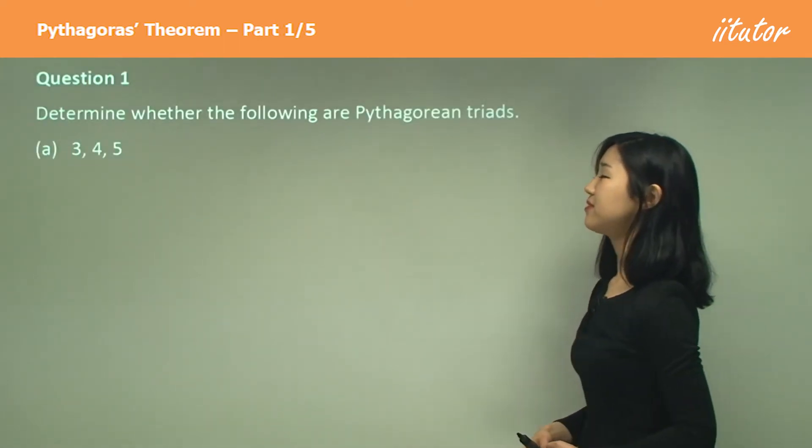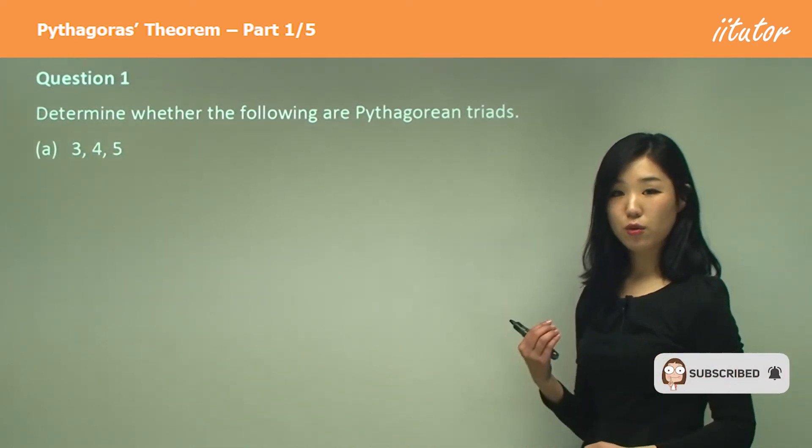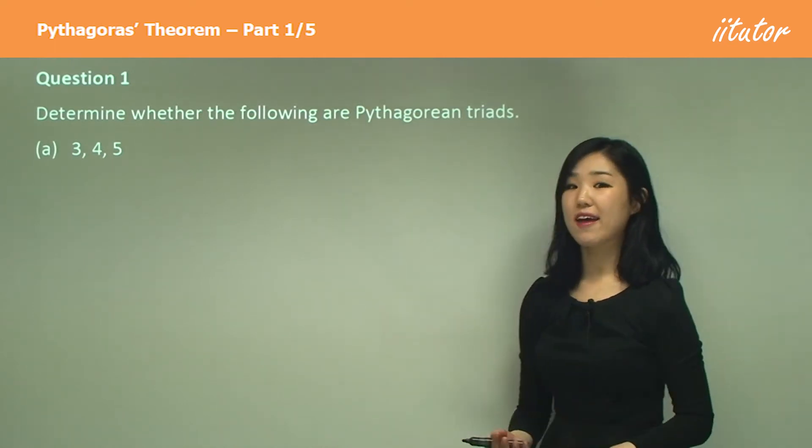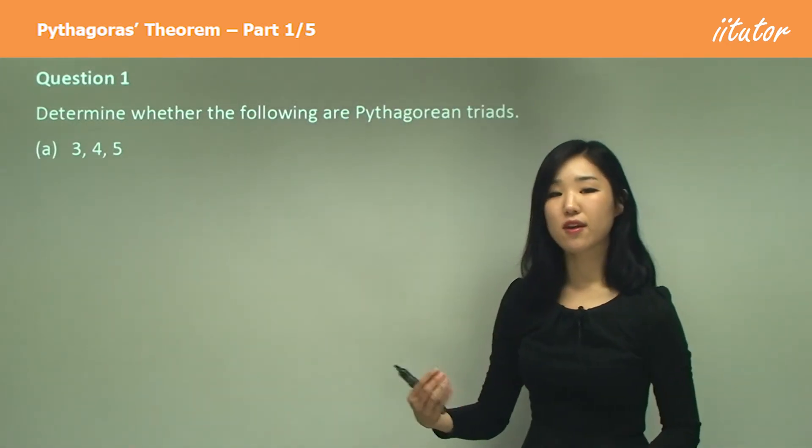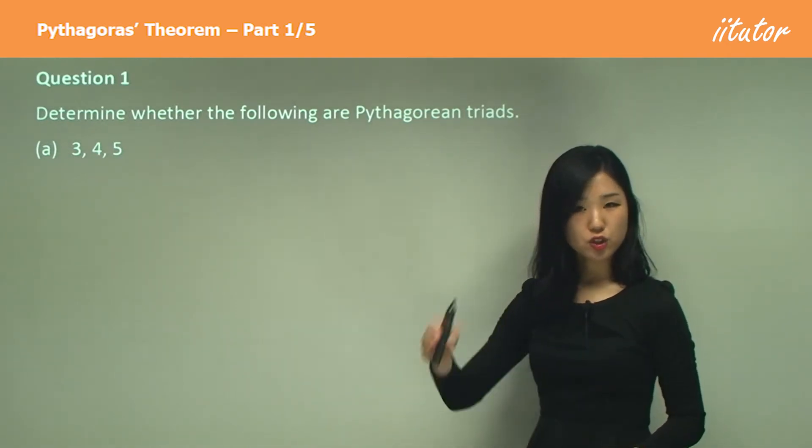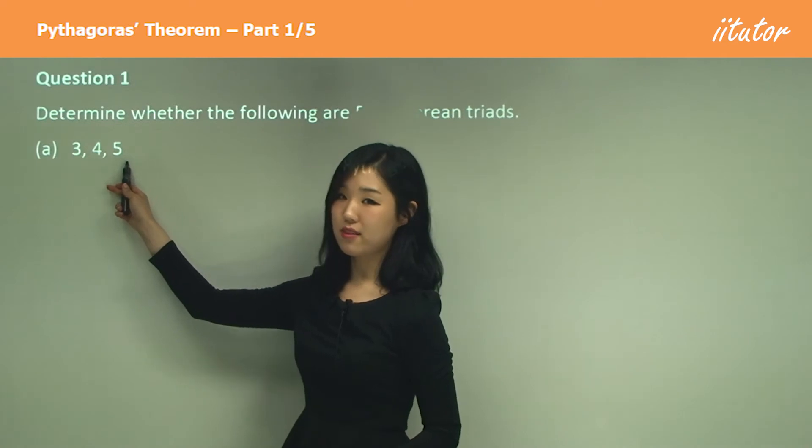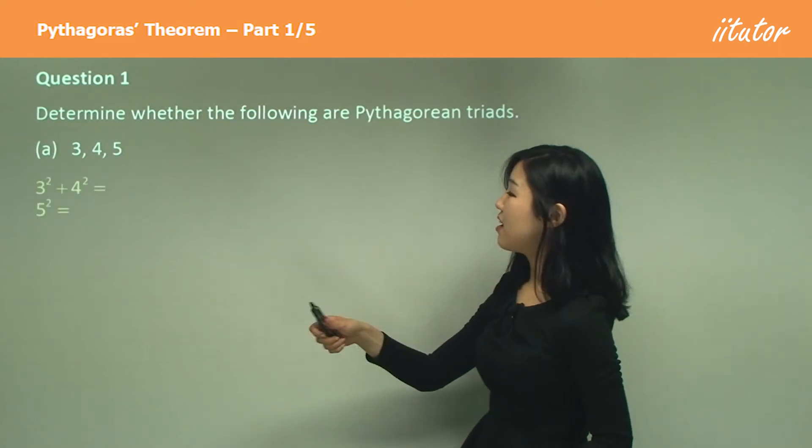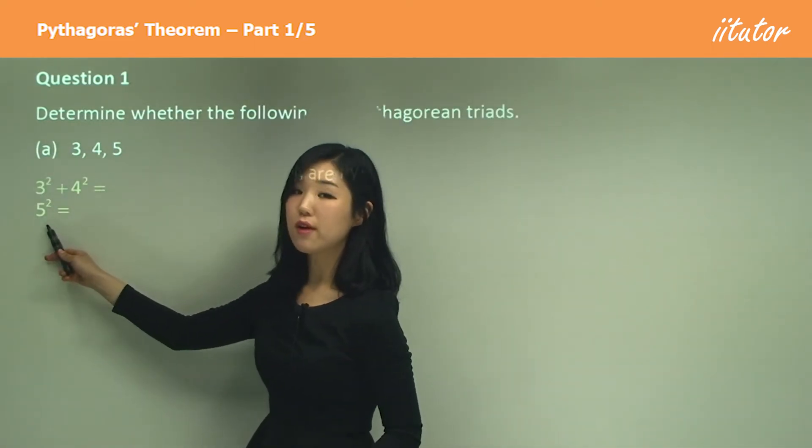Question one: Determine whether the following are Pythagorean triads. Now here's a new little thing I'm going to tell you. It's called the Pythagorean triads. These are when you're given three numbers that follow the Pythagoras theorem. Remember, the longest side is the hypotenuse. So in this case, the longest side must be five because that's the largest number.